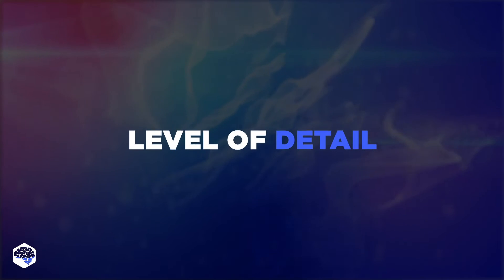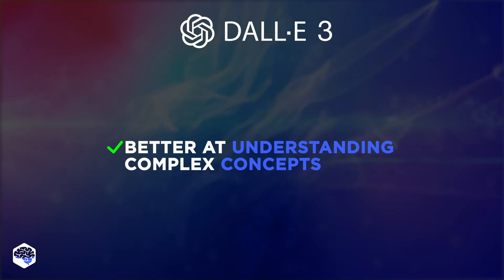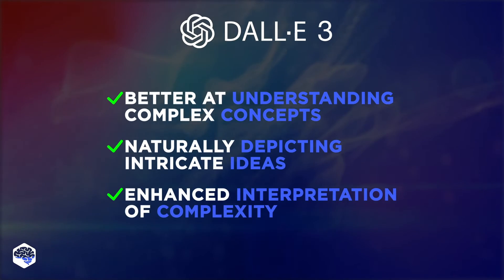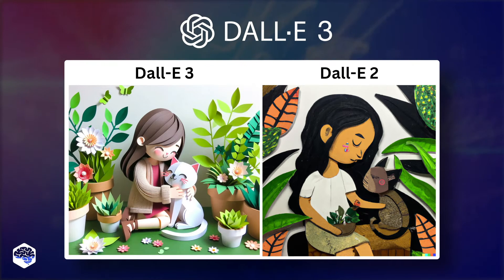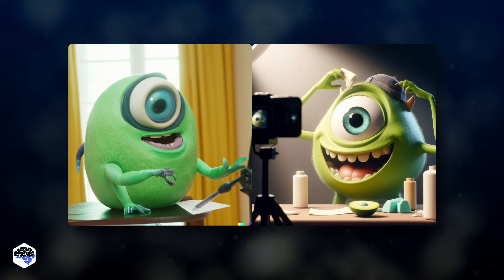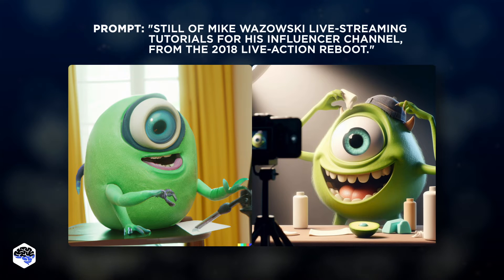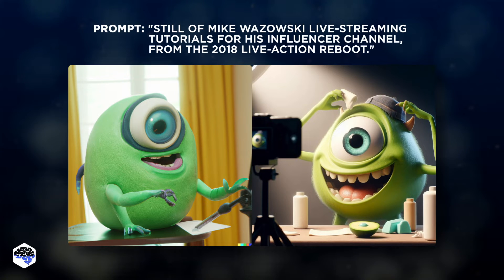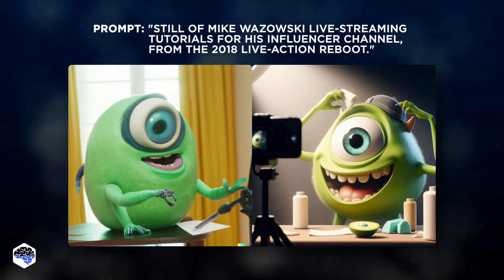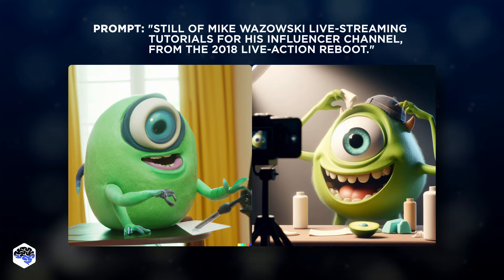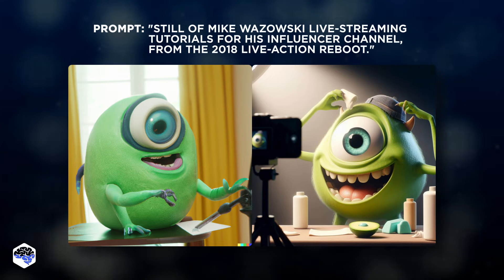DALL-E 3 is claimed to have a better understanding of more complex concepts and depict them in a natural way. Take a look at this picture generated by Jim Clyde Monk — which one conveys the emotions and provides a better understanding of the close nature of the relationship between the girl and the cat? And let's look at another image generated from a prompt by Fabian Moselli: a still of Mike Wazowski live streaming tutorials for his influencer channel from the 2018 live-action reboot. Again, the conveyance of emotions and context in DALL-E 3 is unparalleled to its predecessor.